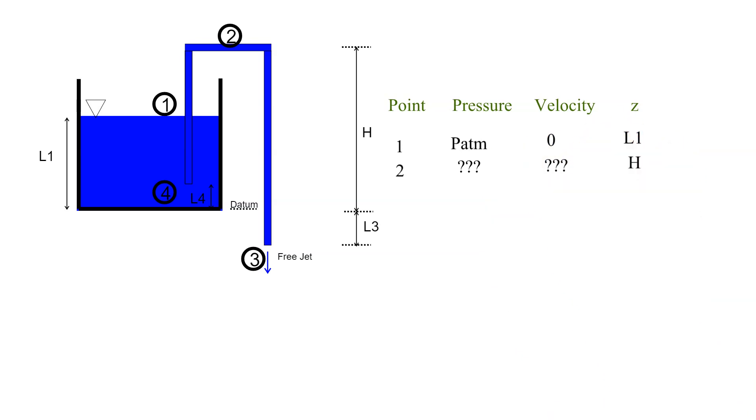For point 3, its pressure is atmospheric since it is a free jet, its velocity unknown, its elevation is given as L3. Note that it is below the chosen datum.